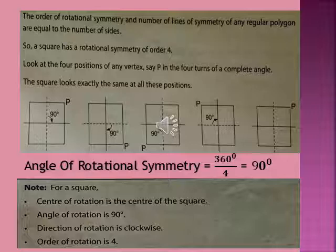For a square, the center of rotation is the center of the square. The angle of rotation is 90 degrees, the direction of rotation is clockwise, and the order is 4.